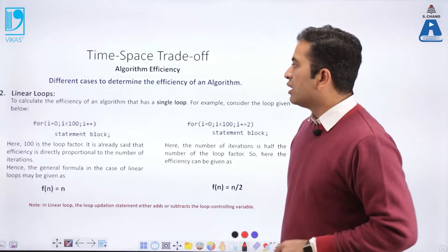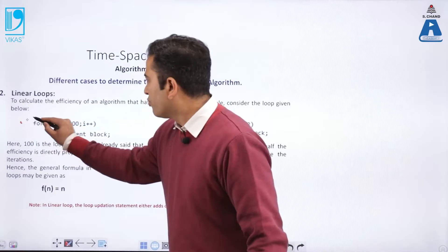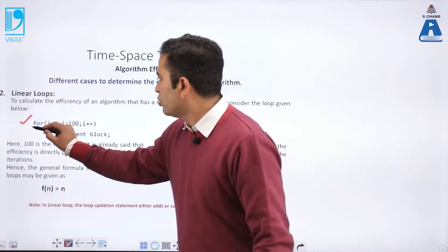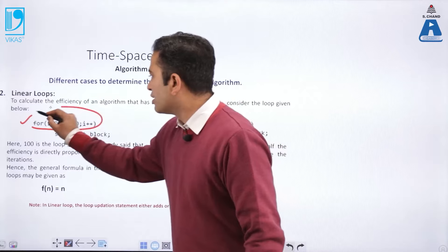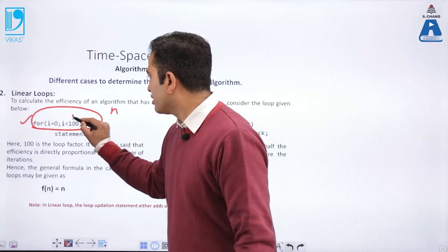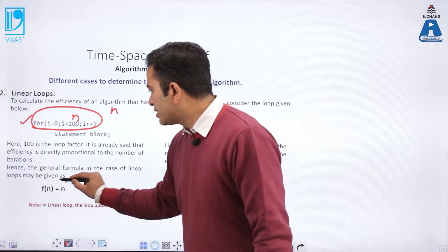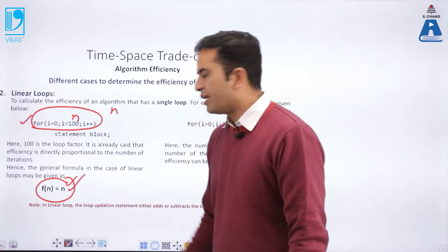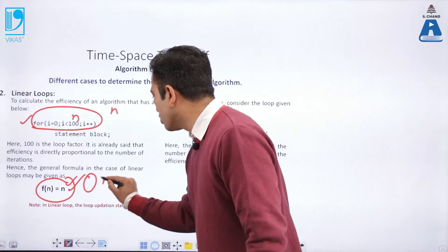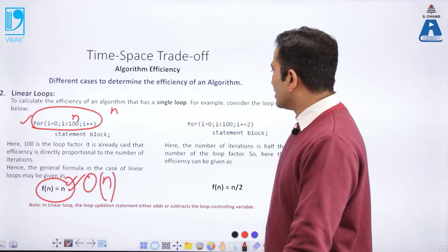The next concept is the linear loop. Consider: for(i = 0; i < 100; i++). This loop will run 100 times. If the upper bound is n, then this loop will run n times. So the complexity of this loop is O(n), because this particular loop runs n times.